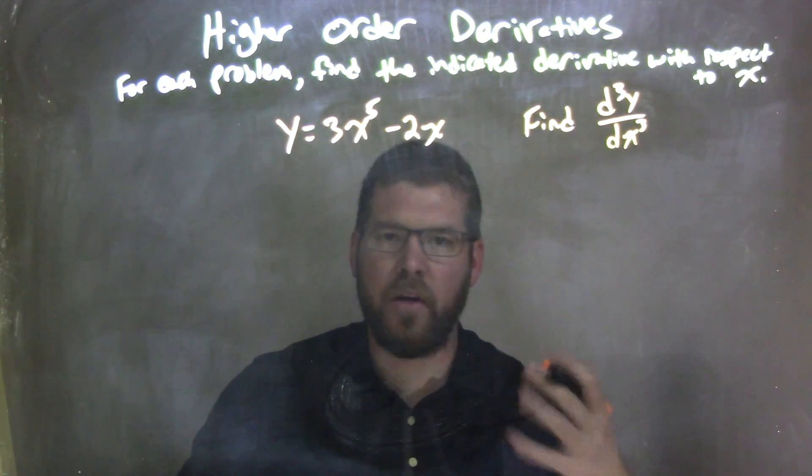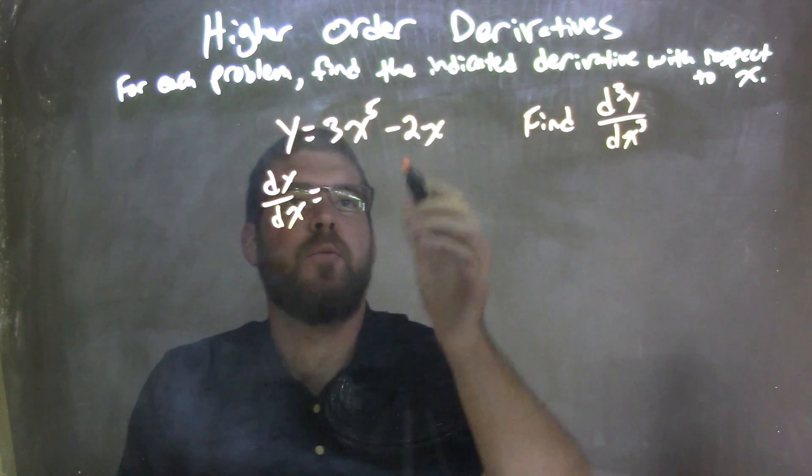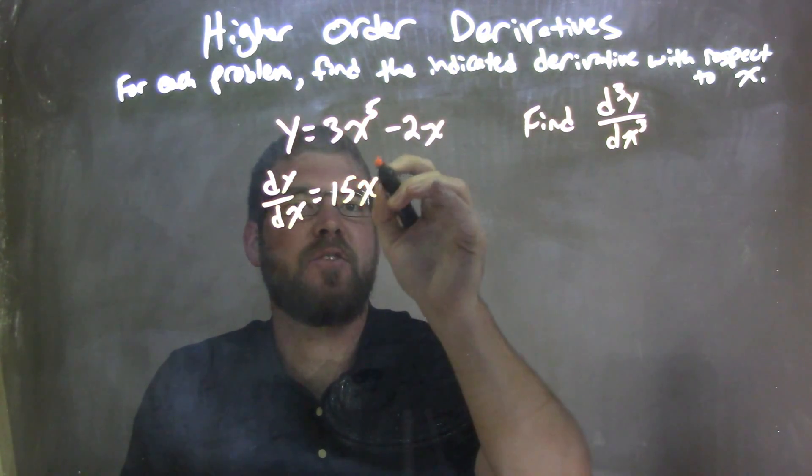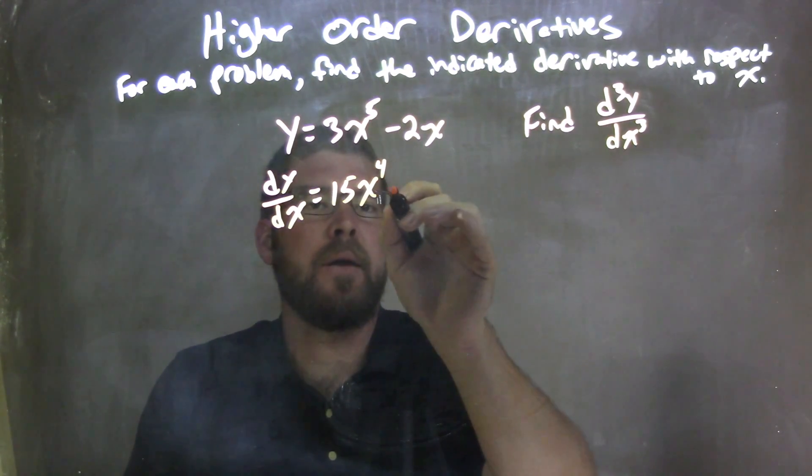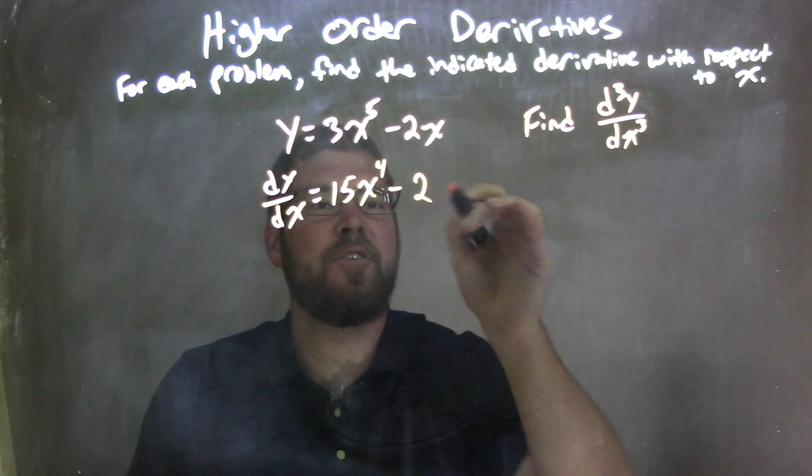Well, the first thing I need to do is find the first derivative. So we have dy/dx here. We use the power rule in this first part, 5 times 3 gave me that 15x to the fourth power, subtract the exponent by 1, minus here, and the derivative of just 2x is just a 2.